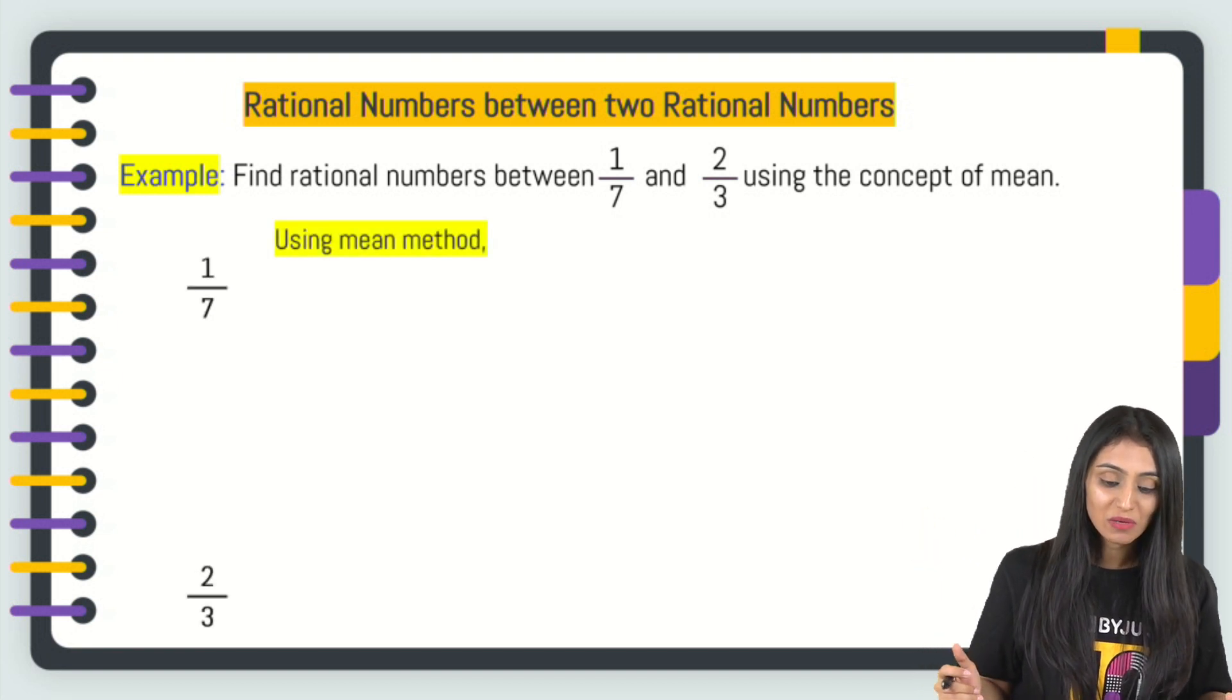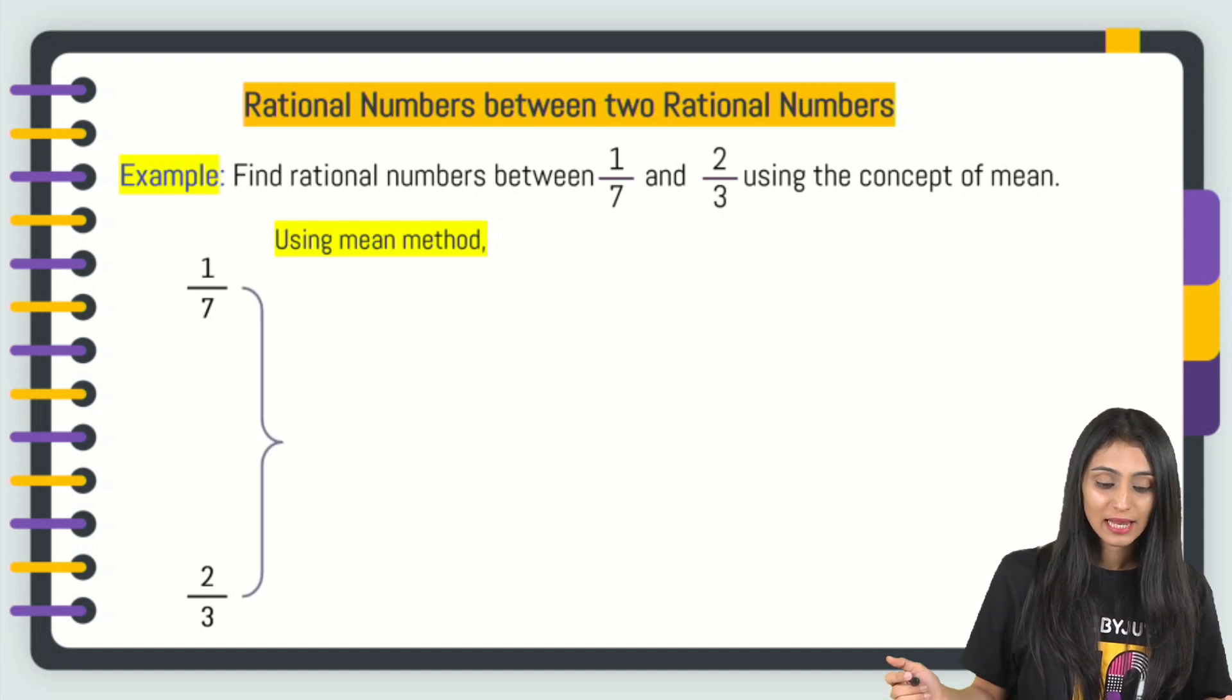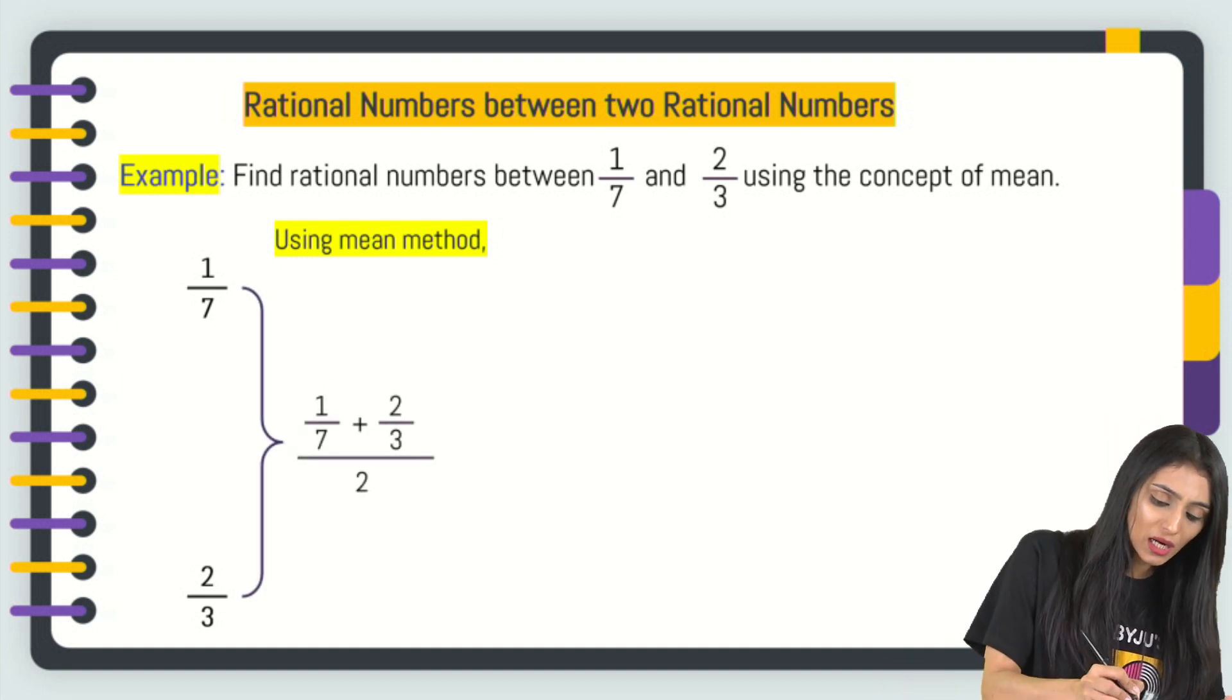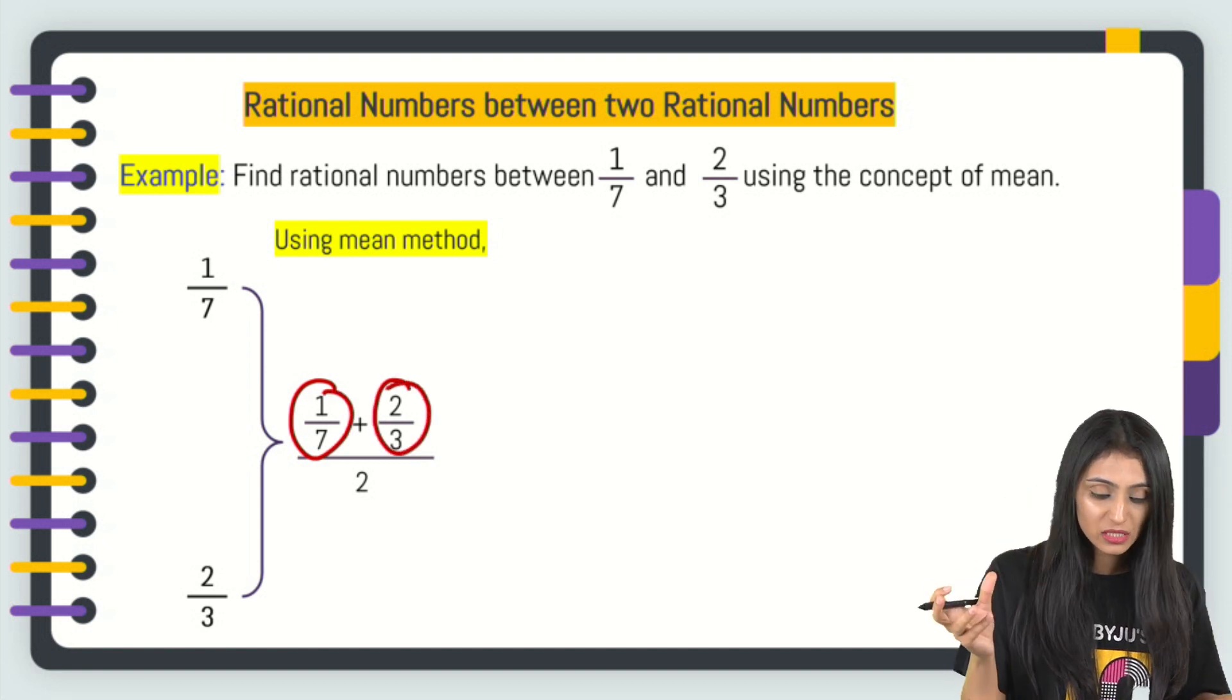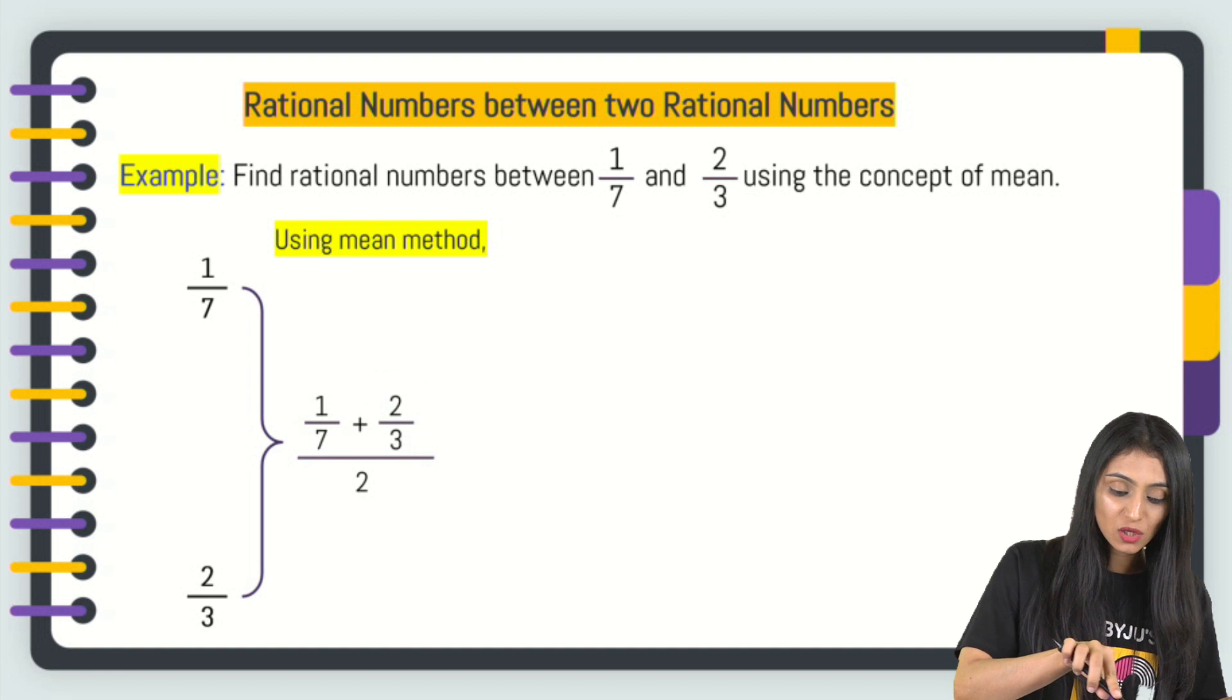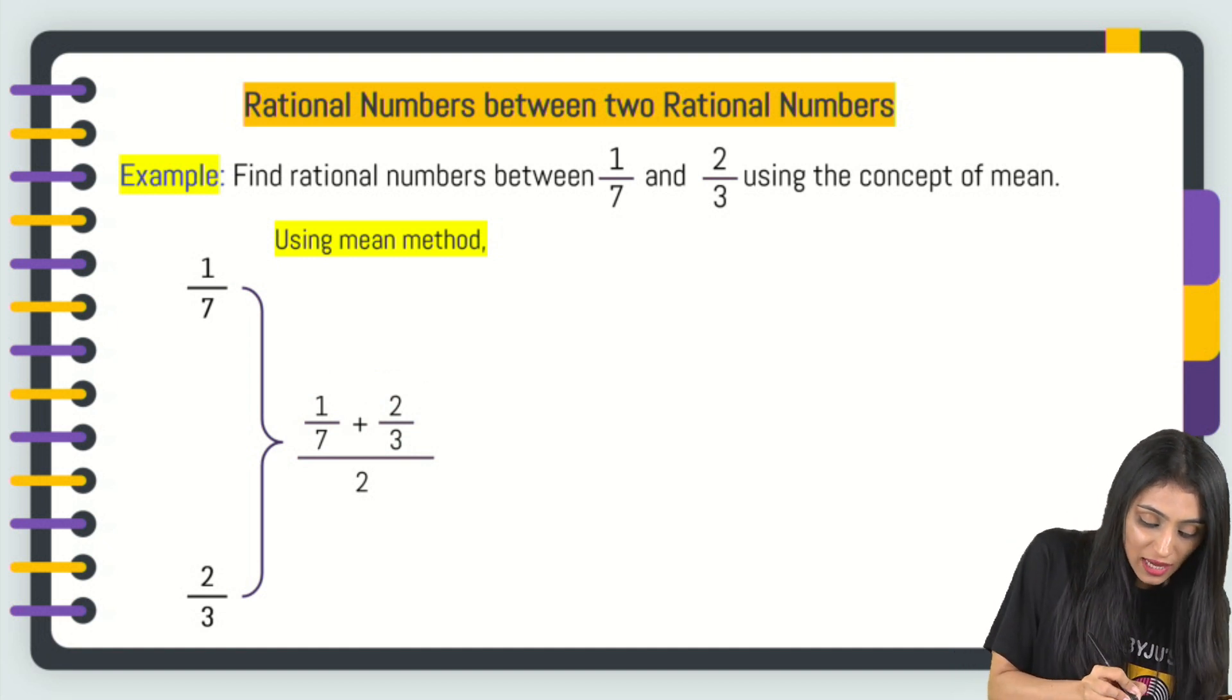Mean method. These are the two numbers. Let's add them up and divide by 2. Now, addition can't be done directly because you can see that they are in fractions, denominators are different. First, we will make the denominator same. What I can do here is multiply this by 3 and this by 7, like you take an LCM.